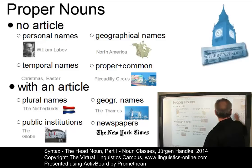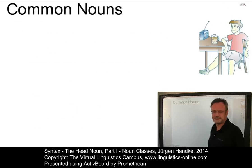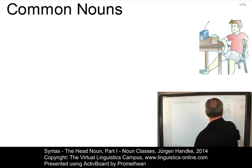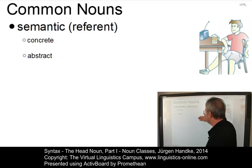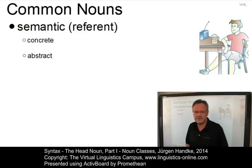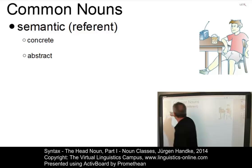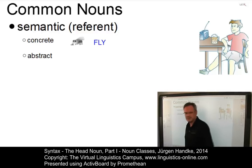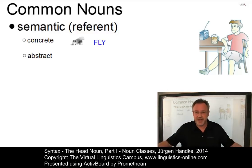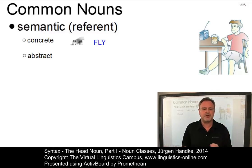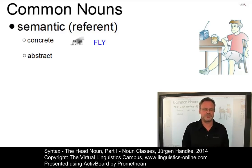Common nouns are subclassified in two ways. Semantically, according to the type of reference, into concrete and abstract. A concrete common noun, for example, is 'fly.' It is an animate physical object — an insect with six legs and two wings — thus a concrete noun which is accessible to our senses: it is observable, it is measurable, and so on and so forth.